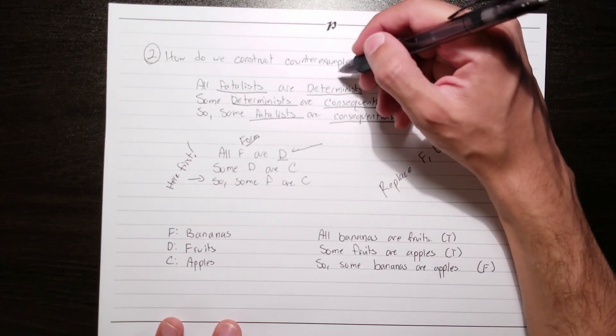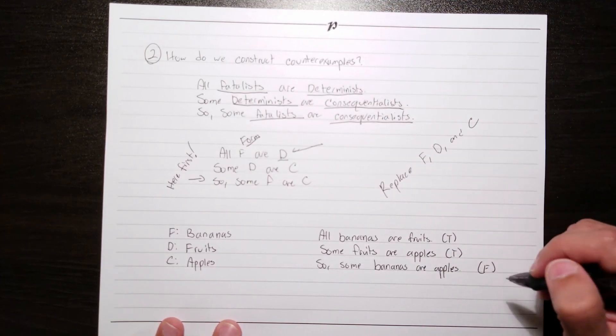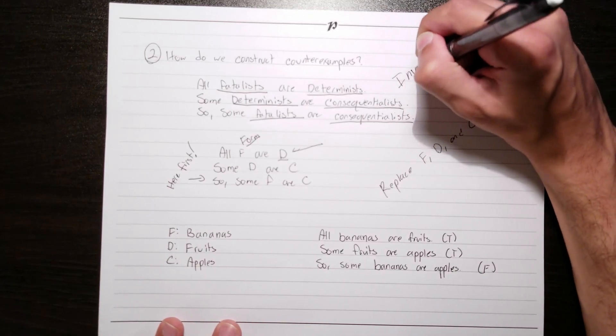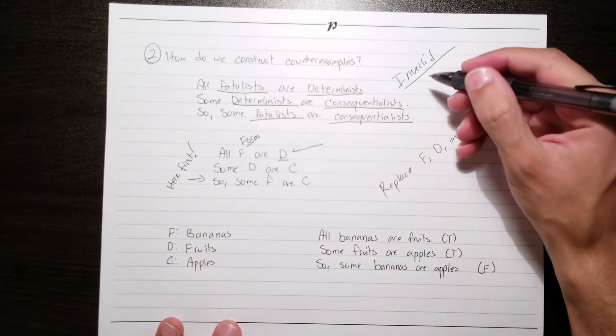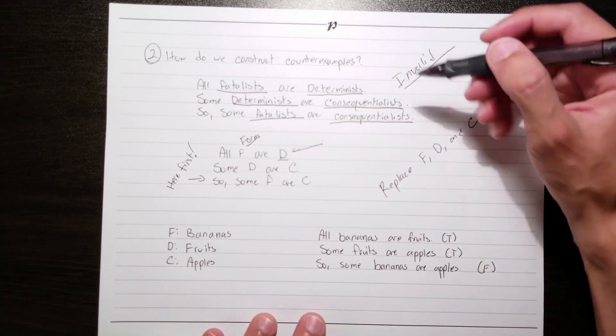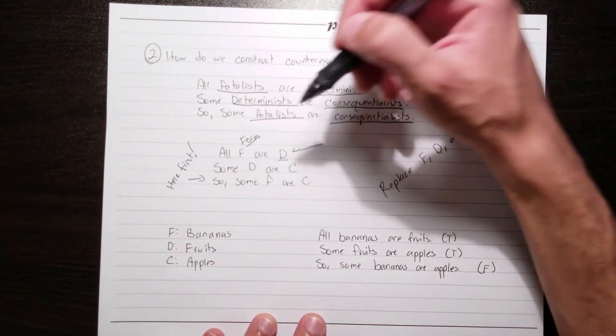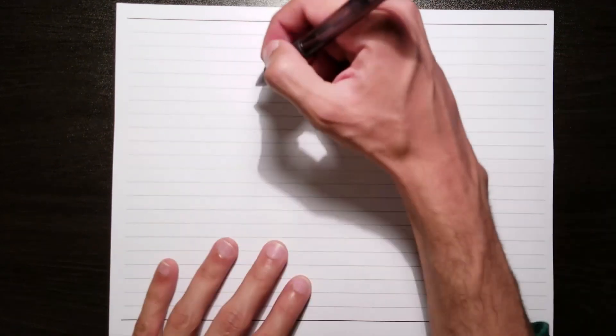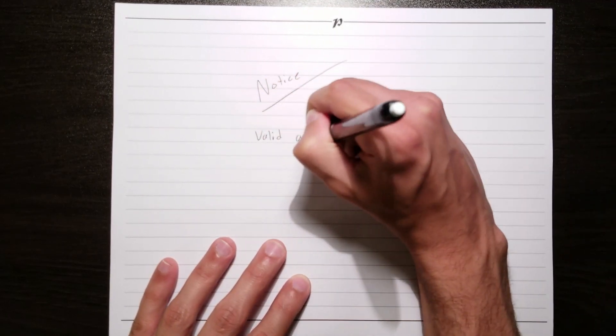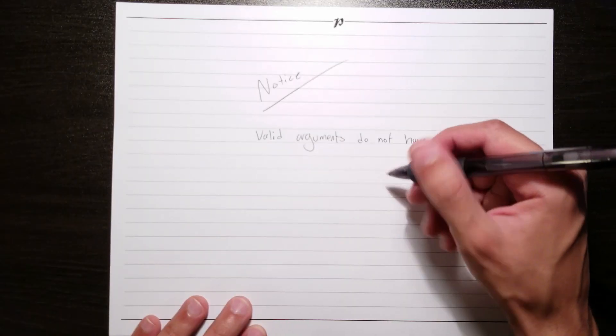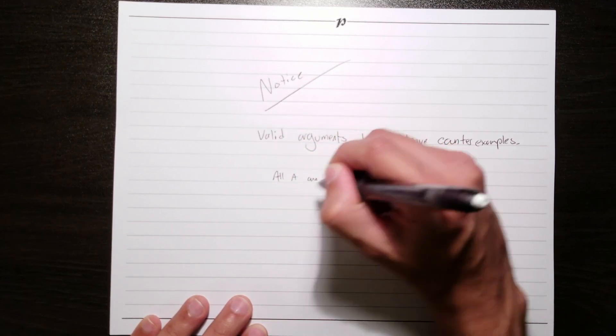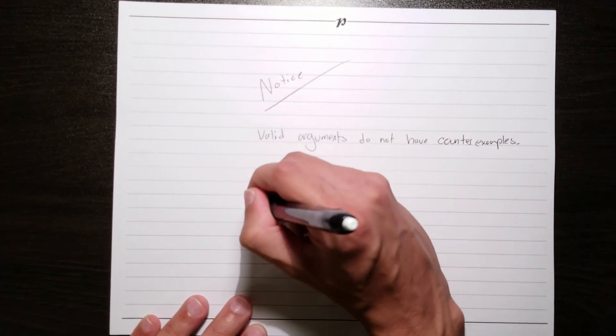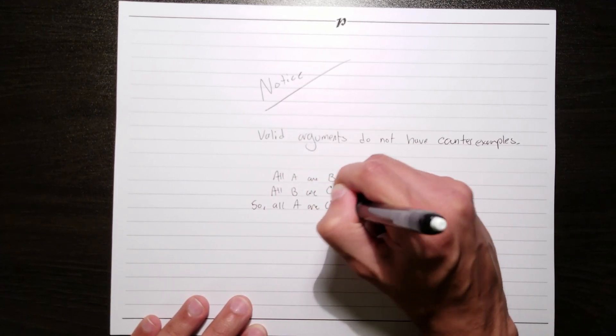We've managed to create a counterexample for our original argument. The fact that we managed to grab the exact same form, but make its premises true and its conclusion false, proves that the argument is invalid. All we're doing when constructing a counterexample is just showing, in an obvious manner, that the form we're dealing with is invalid. Notice, valid arguments do not have counterexamples. Given that all counterexamples must have true premises and a false conclusion, it'll never be possible to construct one for a valid argument. That being said, I welcome you to try. You'll never succeed, but it can make very good practice.